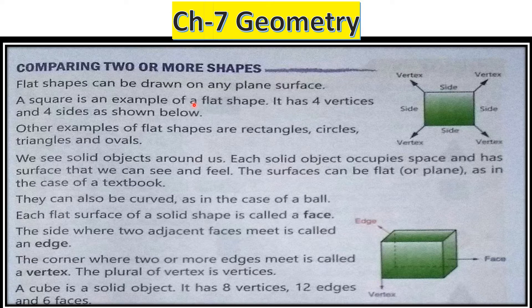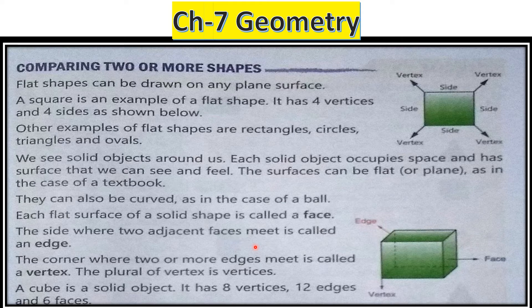Here we will learn about flat shapes as well as solid shapes. Flat shapes are square, rectangle, triangle, circle, and oval. Solid shapes are cube, cuboid, cone, cylinder, and sphere. These are the examples of solid shapes. Now let's learn about solid shapes and flat shapes.